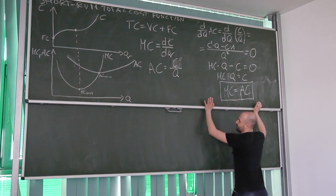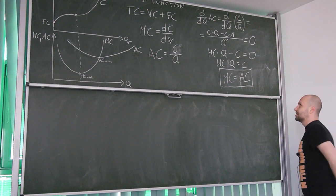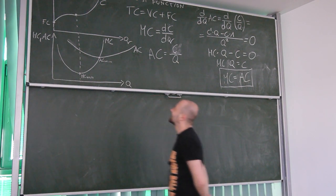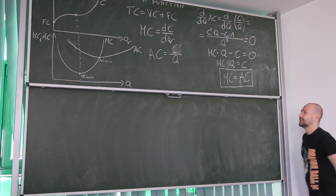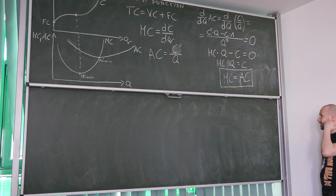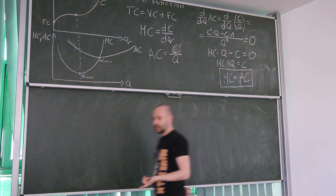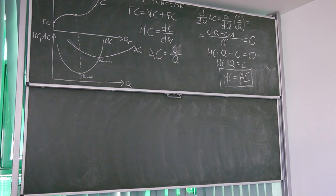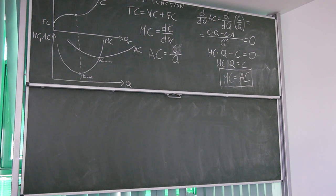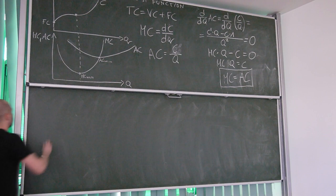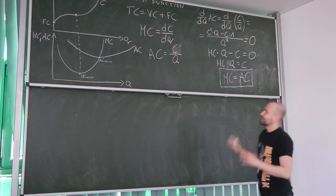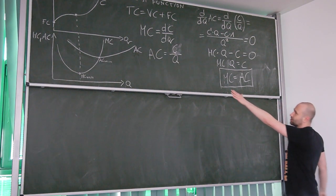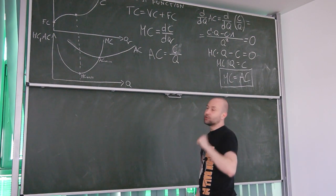Now let's get a little bit deeper into it. The short-run total cost function has a very specific shape. We can notice that we saw this shape somewhere — it's associated with a cubic function. So now we can use a cubic function to model short-run total cost.